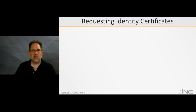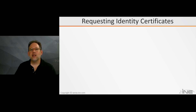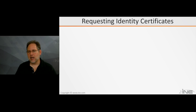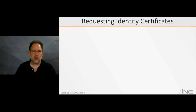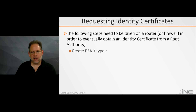Prior to your Cisco IOS device — which could be a router or a switch, or even a firewall, though firewalls don't technically run Cisco IOS — some basic preliminary stuff has to be configured and functioning before we can talk to the certificate authority and ask for a digital certificate. Number one, your device has to have an RSA key pair. You need to create that.